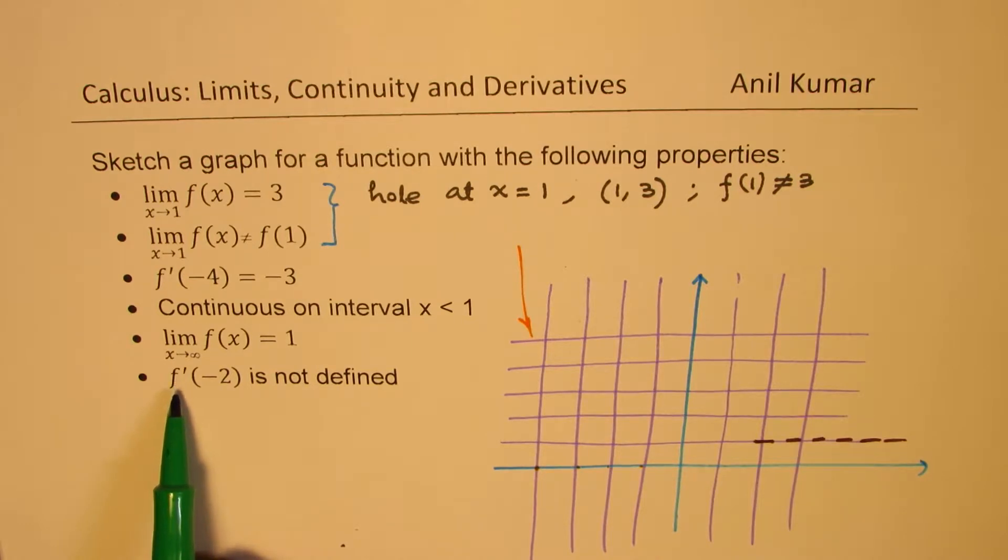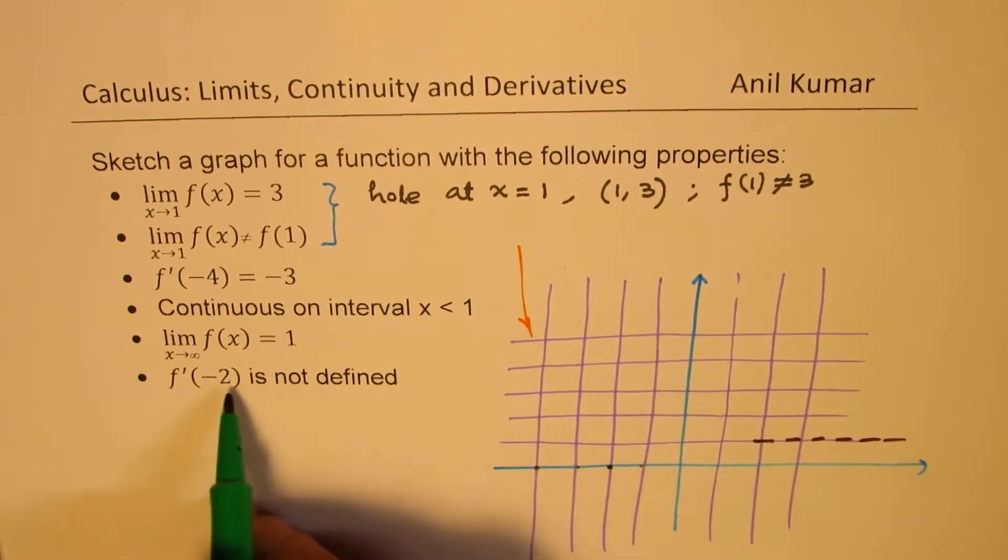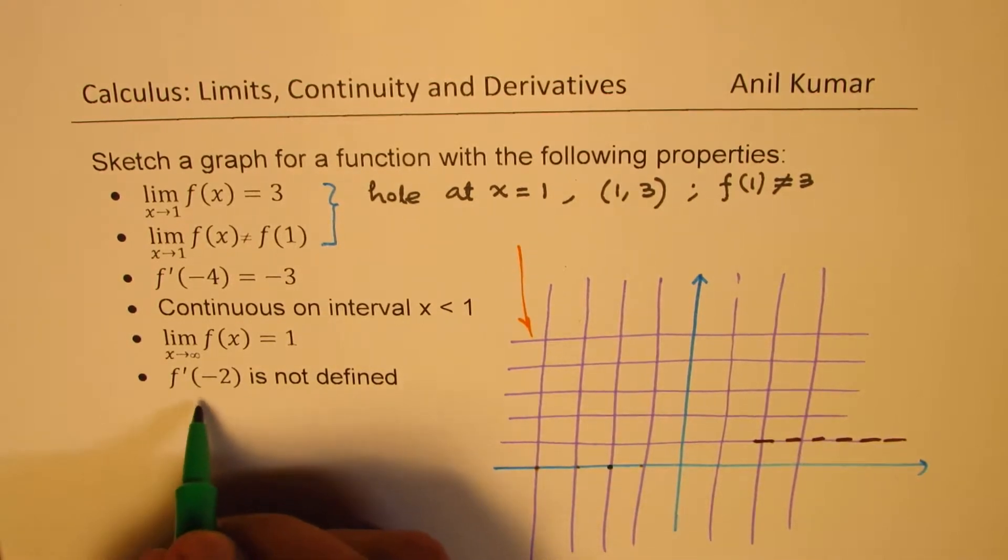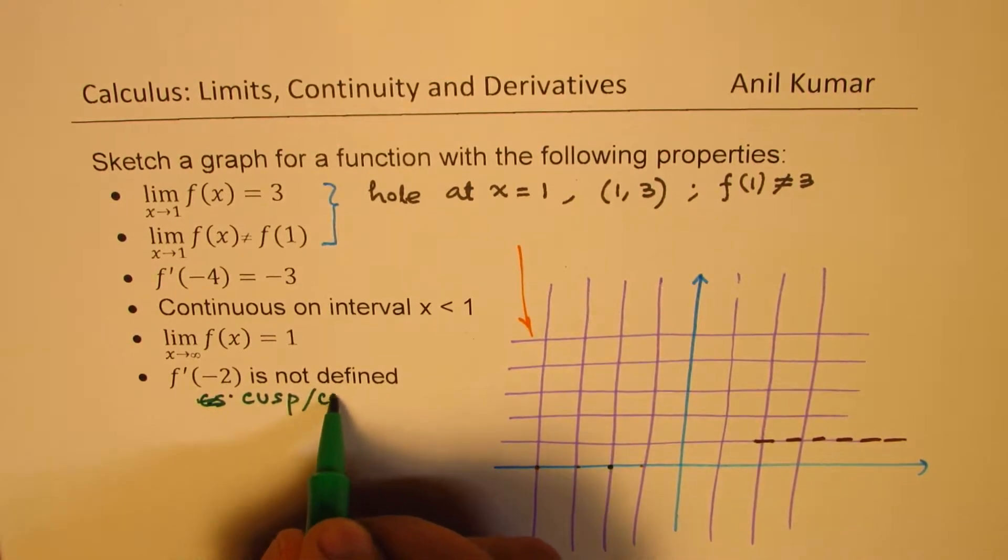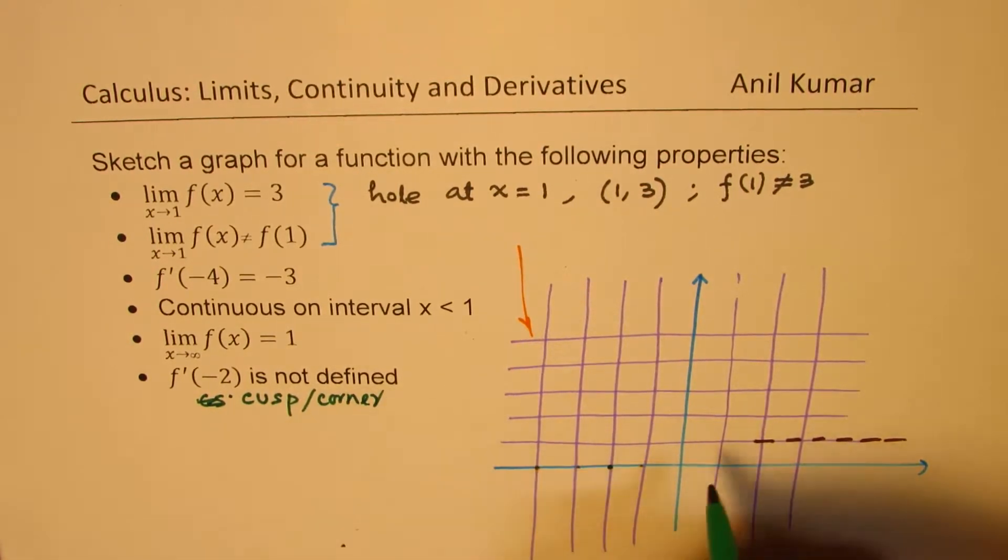And the derivative at minus 2 is not defined. So here it is not defined. That means we could have a cusp or corner at minus 2. Does it make sense to you? So that is how the function could be.